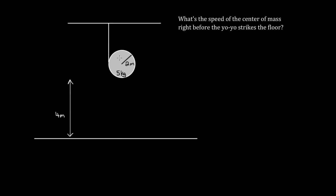Let's do some examples. Take a solid cylinder of five kilograms with a radius of two meters. Wind a bunch of string around it, tie the loose end to the ceiling, let go, and let the cylinder unwind downward. Drop it from a height of four meters — how fast is the center of mass going right before it hits the ground? We're calling this a yo-yo. The string is wound around the outside edge, and this is basically a case of rolling without slipping — the cylinder is not slipping with respect to the string.